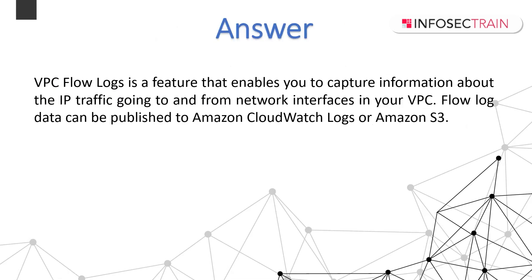What is VPC Flow Logs? VPC Flow Logs is a feature that enables you to capture information about the IP traffic going to and from network interfaces in your VPC. Flow log data can be published to Amazon CloudWatch Logs or Amazon S3. After you have created a flow log, you can retrieve and view its data in the chosen destination. Flow logs can help with tasks such as diagnosing overly restrictive security group rules and monitoring the traffic reaching your instances.